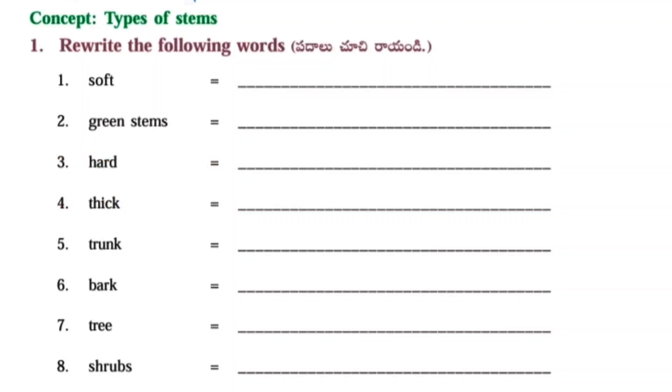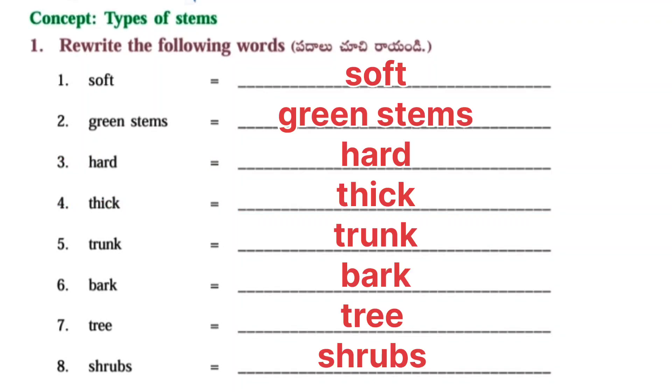Worksheet Number 2: Concept Types of stems. Rewrite the following words: Soft, Green stems, Hard, Thick, Trunk, Bark, Tree, Shrubs.